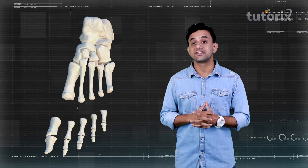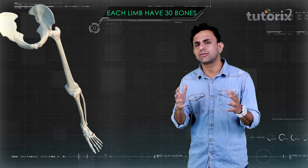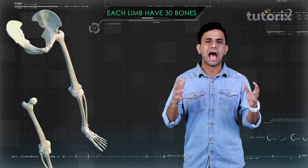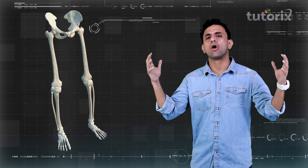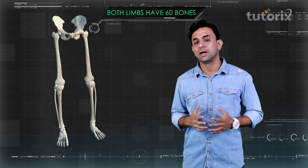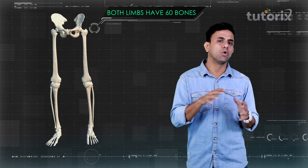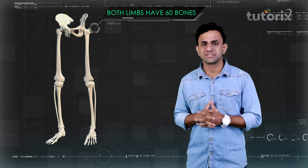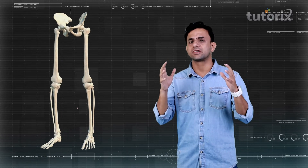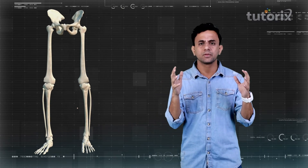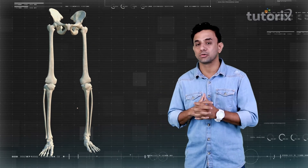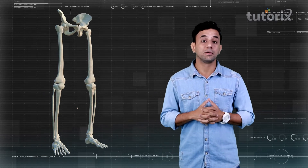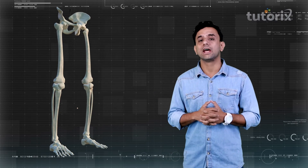So this was all about the bones of the lower limb. Each lower limb has 30 bones, and in total both lower limbs together have 60 bones. Let's now summarize the important points covered in this session.